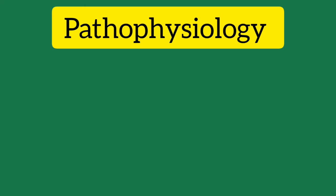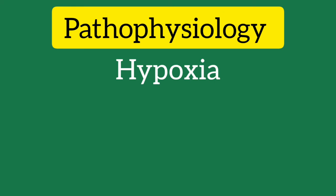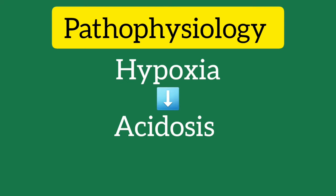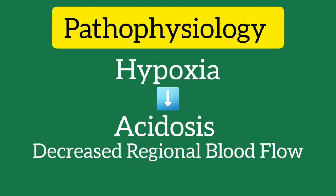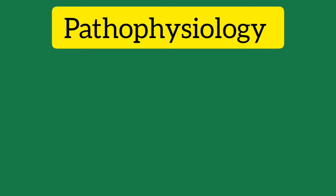Regarding the pathophysiology of shock, hypoxia at the cellular level causes a series of physiological and biochemical changes resulting in acidosis and a decrease in regional blood flow, which further worsens tissue hypoxia. In hypovolemic, obstructive, and cardiogenic shock, there is a decrease in cardiac output and decreased oxygen transport. In distributive shock, there is decreased peripheral vascular resistance and abnormal oxygen extraction.